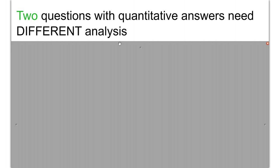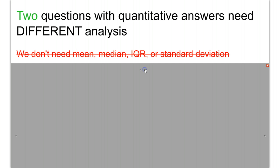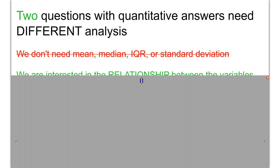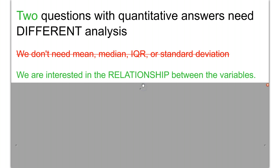When you have two questions that both have quantitative answers, you need to analyze your data differently than if you had a single one. With a single quantitative variable, you would usually look at the mean, median, IQR, and standard deviation — getting a sense of where the middle is and where the spread is. However, when you have two paired together, we're a lot more interested in the relationship that connects those two quantitative variables: what makes them predictable from each other, and if I know one, what does that tell me about the other?